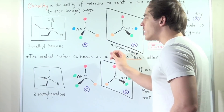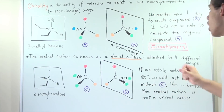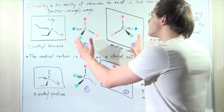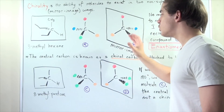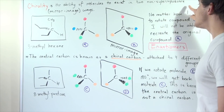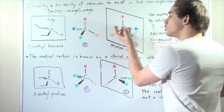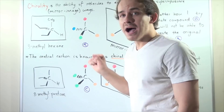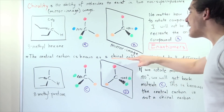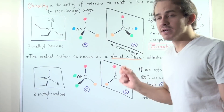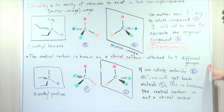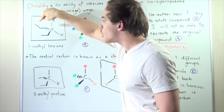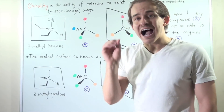These two molecules are mirror images of one another, and another name for them is enantiomers. Enantiomers are compounds that have the same exact molecular formula but are mirror images of one another. Just like our hands, these two molecules are non-superimposable — there's no way to rotate this molecule and get back compound A. In this chiral molecule, the central carbon is known as a chiral carbon — a carbon attached to four completely different groups: the H group, the methyl group, the ethyl group, and the propyl group.